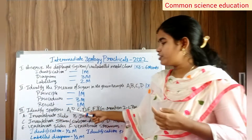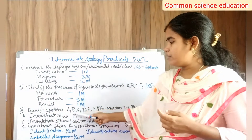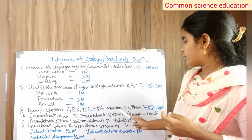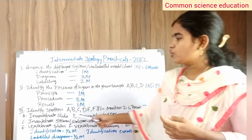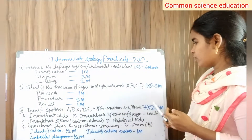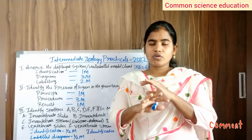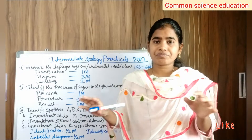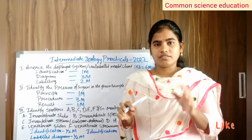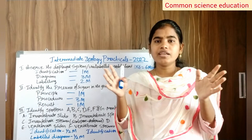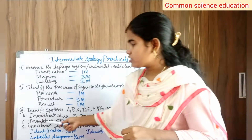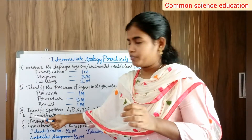Roman number 3 identifies specimens A, B, C, D, E, F, and G. In total, we have 14 marks — 7 marks on each side. So in Roman number 3, each specimen identification carries 1 mark, totaling 7 marks per set.